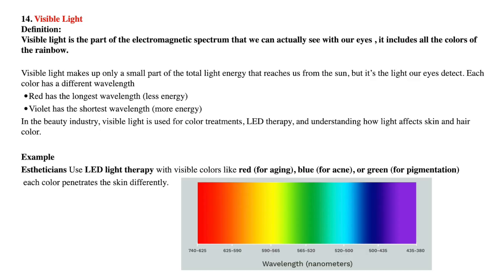Number fourteen, visible light. Visible light is the part of the electromagnetic spectrum that we can actually see with our eyes — it includes all the colors of the rainbow. Visible light makes up only a small part of the total light energy that reaches us from the sun. Each color has a different wavelength: red has the longest wavelength but less energy, and violet has the shortest wavelength but more energy. In the beauty industry, visible light is used for LED therapy — estheticians use visible colors like red for aging, blue for acne, or green for pigmentation, and each color penetrates the skin differently.